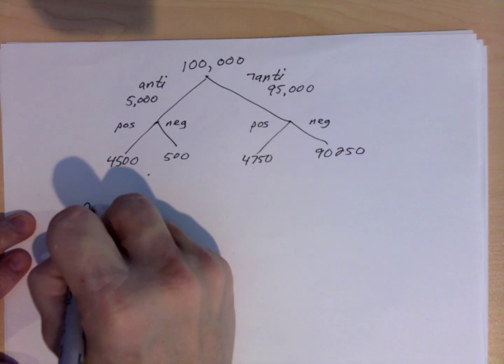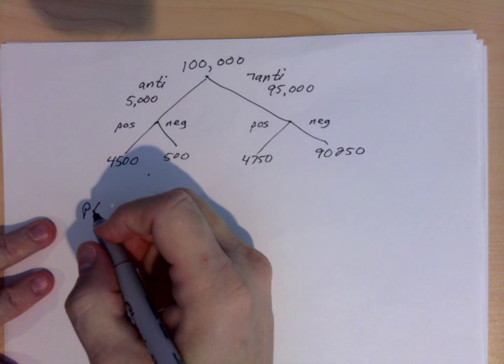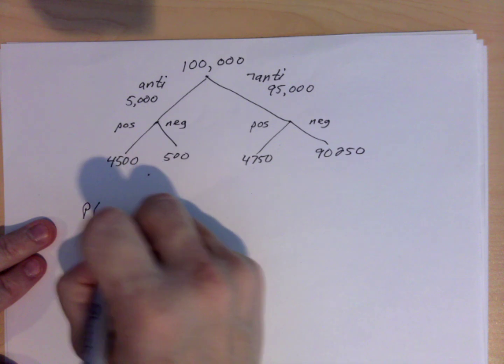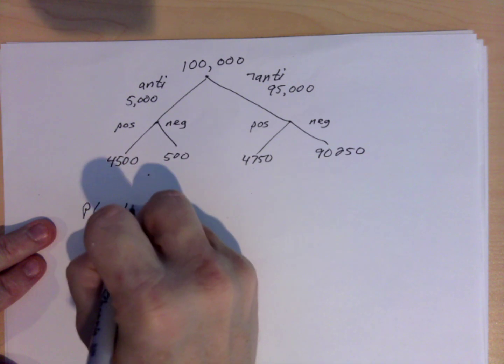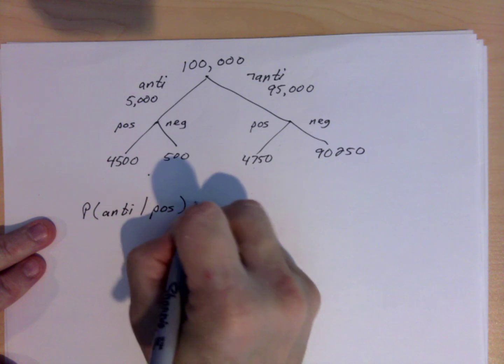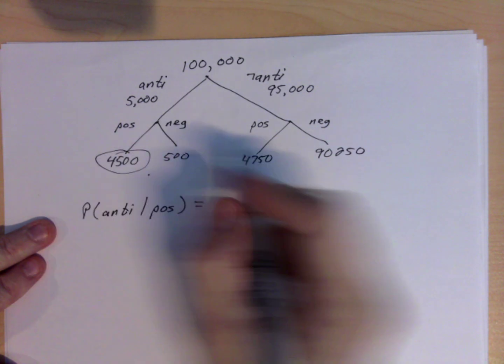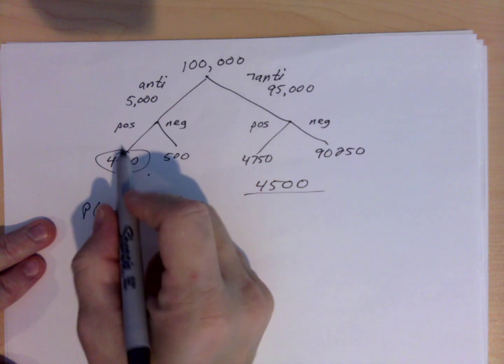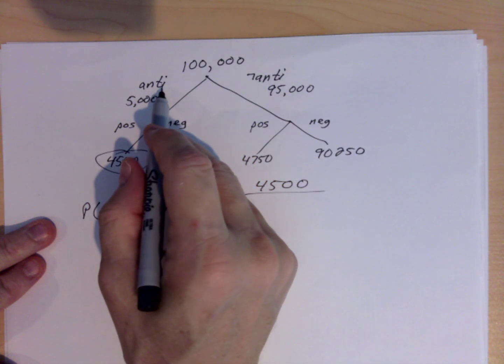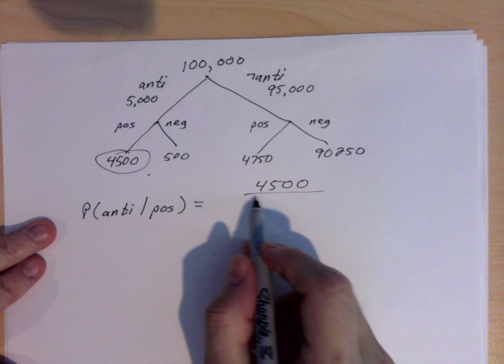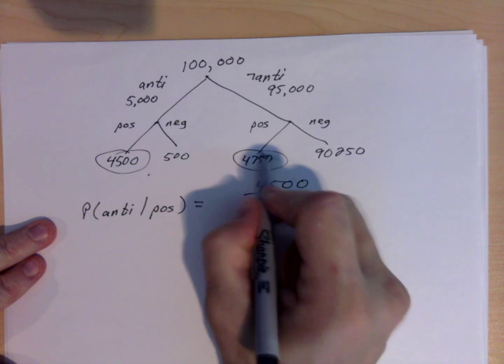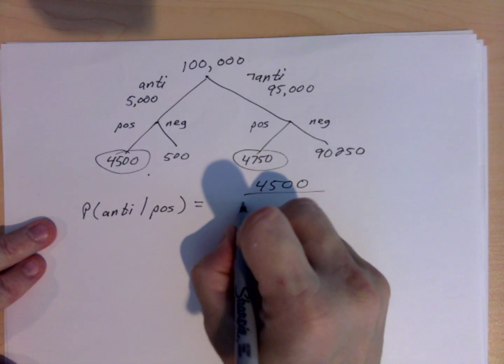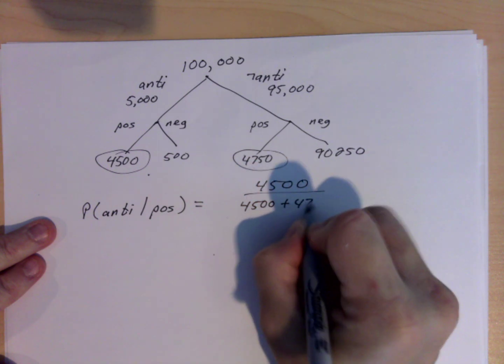So now to say what's the probability that a person actually has antibodies given that they test positive for antibodies is equal to the 4,500 who test positive given that they actually have antibodies, divided by the total number of people who test positive, which is 4,500 plus 4,750.